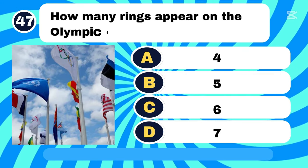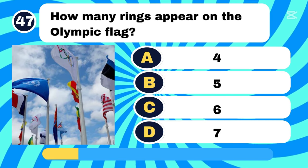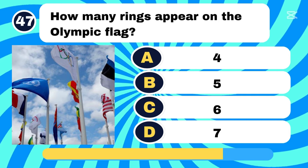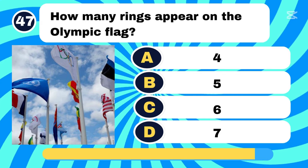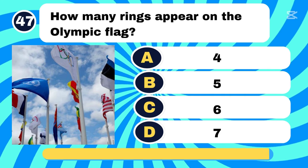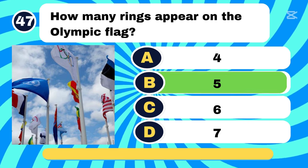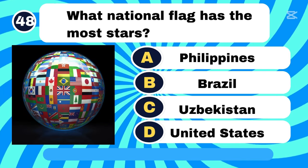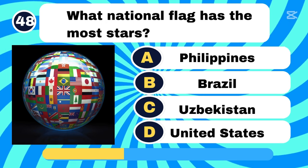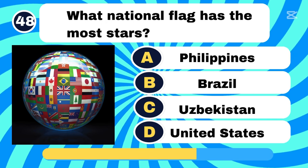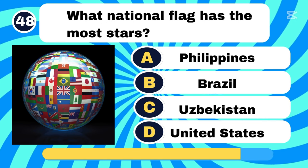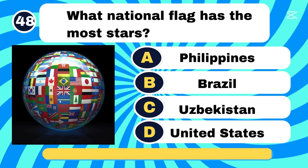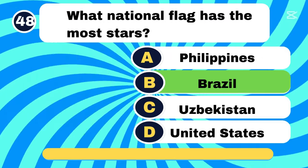How many rings appear on the Olympic flag? Letter B, 5. What national flag has the most stars? Letter B, Brazil.